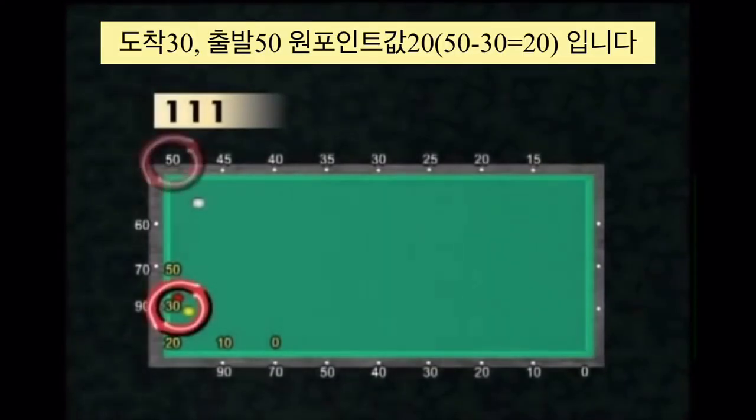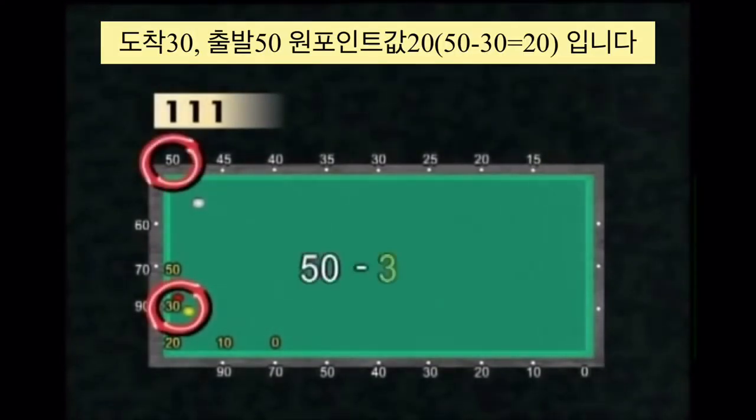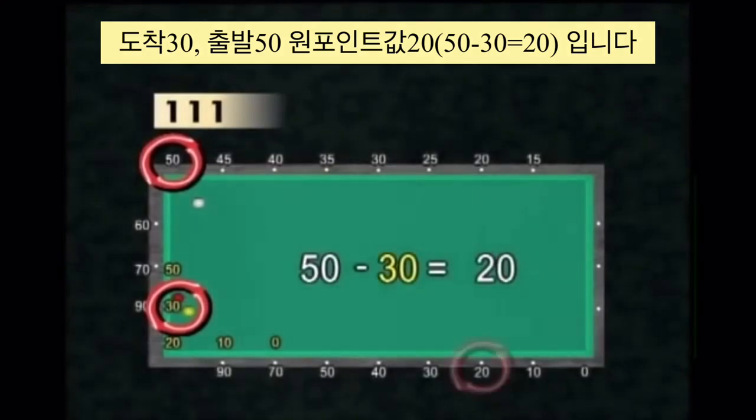With an arrival at 30 and a departure at 50, the player must aim for 20 in the direction of the second diamond.